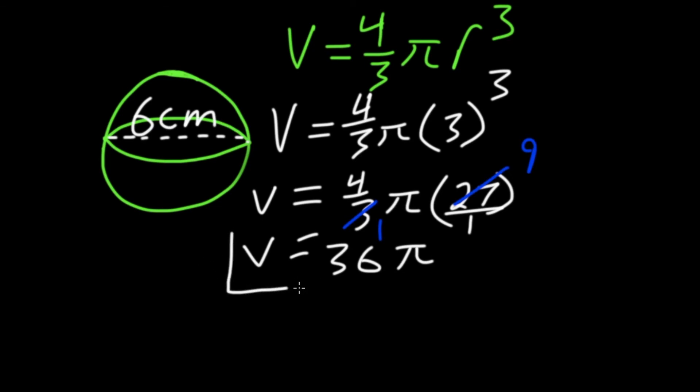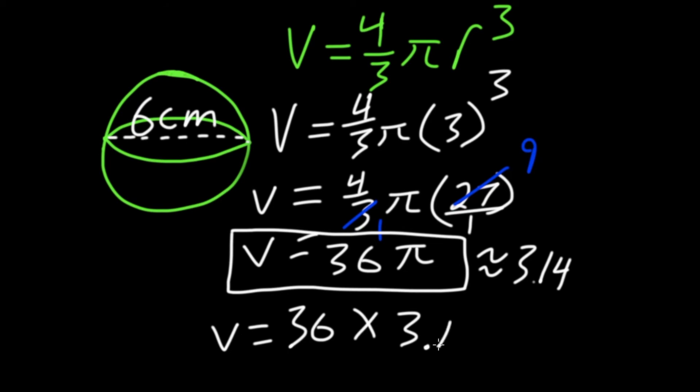And that's actually an okay answer. But if you don't want pi in your answer, remember pi is approximately equal to 3.14. So if we times 36 by 3.14,